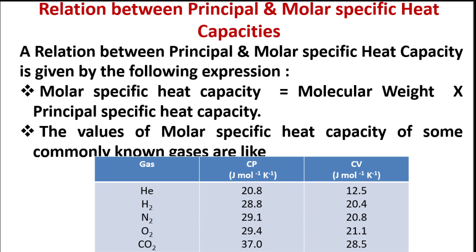Oxygen (O2) has a Cp value of 29.4 and a Cv value of 21.1. Lastly, carbon dioxide (CO2) has a Cp value of 37.0 and a Cv value of 28.5.